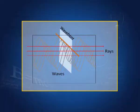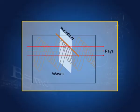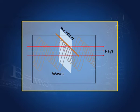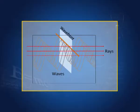Now, if I take all the points in the same phase — say this point has a phase π/2, this point has a phase π/2, this point has a phase π/2 — and several waves are going, all in sinusoidal curves, and if I take a line which joins the points in the same phase, these particles are all in the same phase.